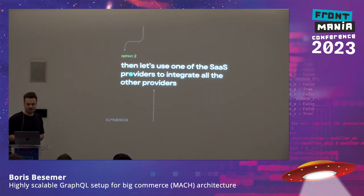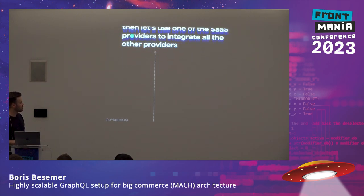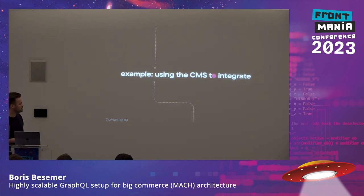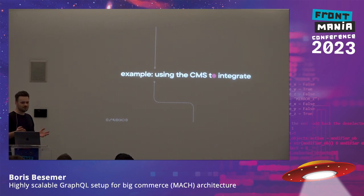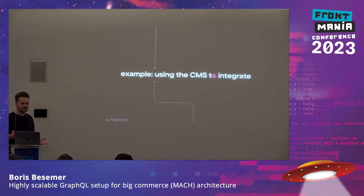Option two: use one of those other SaaS providers to integrate all of the other providers. A headless CMS like Contentful or Contentstack might have the option to integrate other services — a marketplace where they offer integrations for Shopify, BigCommerce, or Commerce Tools. They'll just take your data, you can integrate it, and have everything available on the CMS. You only have to fetch from the CMS and you have everything. One fetch — which is great.